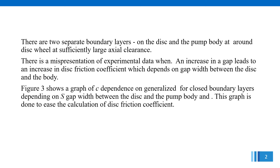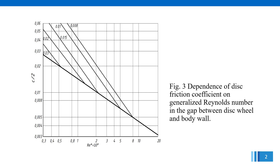There are two separate boundary layers on the disk and the pump body around the disk wheel at sufficiently large axial clearance. There is a misrepresentation of experimental data when an increase in gap leads to an increase in disk friction coefficient, which depends on gap width between the disk and the body. Figure 3 shows a graph of C dependence on generalized Reynolds number for closed boundary layers, showing the dependence of C on gap width between the disk and the pump body. This graph is provided to ease the calculation of disk friction coefficient. Figure 3: dependence of disk friction coefficient on generalized Reynolds number in the gap between disk wheel and body wall.